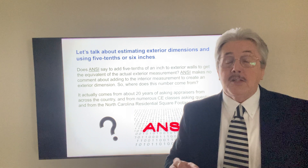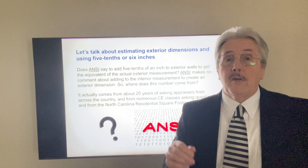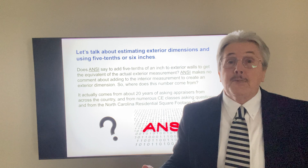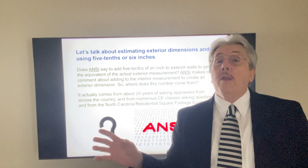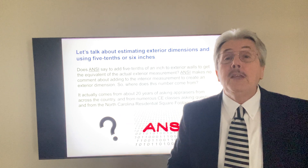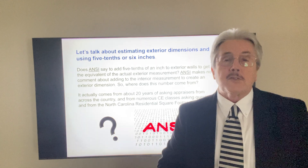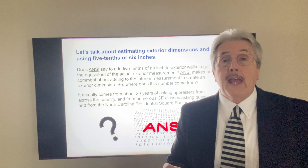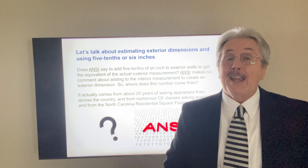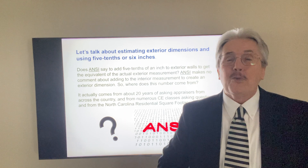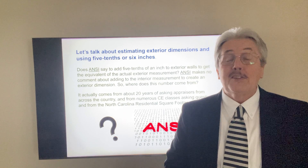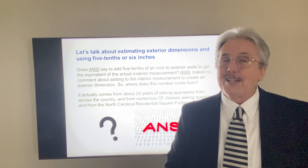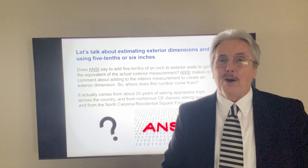If you have a question about that and can't determine what the exterior dimension should be, use five tenths or six inches. The whole point of a standard is consistency — using five tenths or six inches gives us that consistency when we measure upper levels of one-and-a-half story homes. If you want to be consistent and want to know where you got the information from, those are the sources you can use. I hope we'll all be consistent, especially as new LiDAR technology is used for measuring exterior dimensions from interior measurements. Thanks for watching.